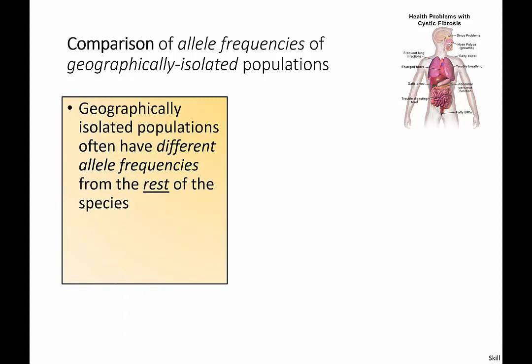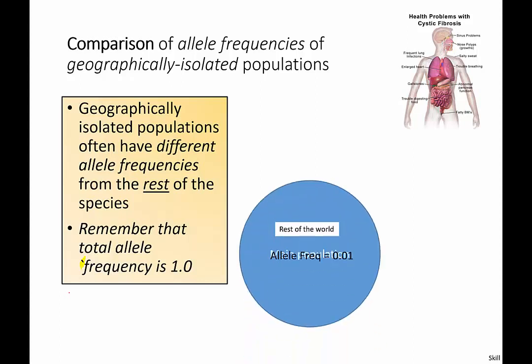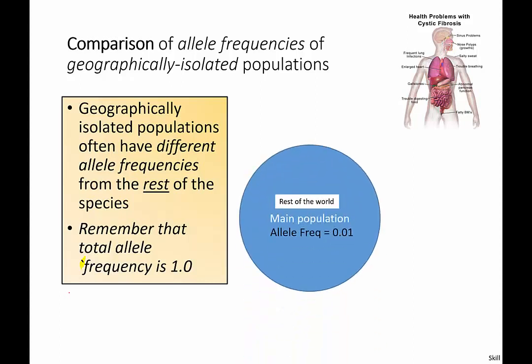Geographically isolated populations often have different allele frequencies from the rest of the species. We'll see a diagram on the right here in a second. Remember that total allele frequency is 1.0, so if 5% of the alleles in a population are of the recessive type, then 1 minus 0.05 equals 0.95 — meaning 95% of the remaining alleles will be of the dominant type.